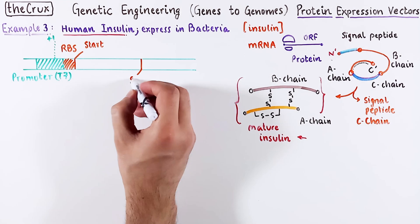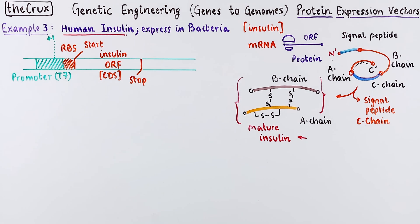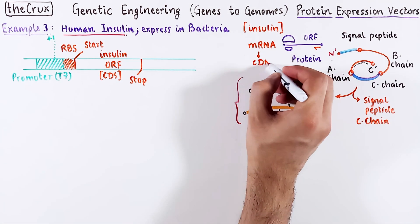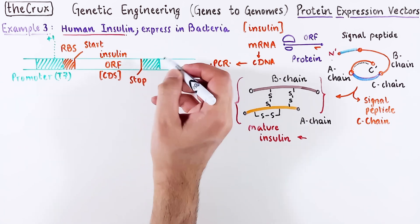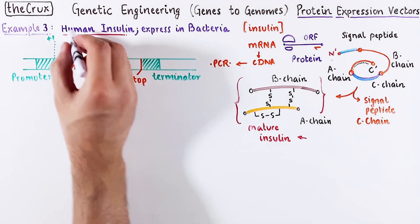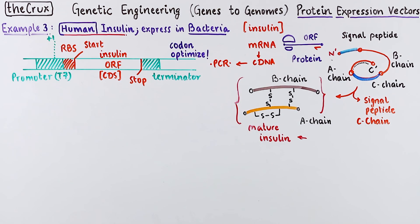Now, let's go back to the expression vector. Going with the same logic as before, if you wanted the insulin template for your protein expression vector, you would take the RNA, make cDNA from it, and clone that product between the promoter and the terminator, and you might also codon-optimize the ORF to make the protein synthesis efficient. The product of this ORF will be cytosolic.